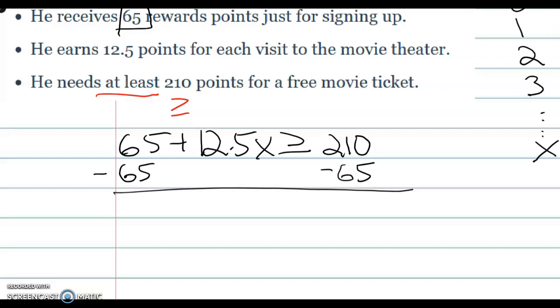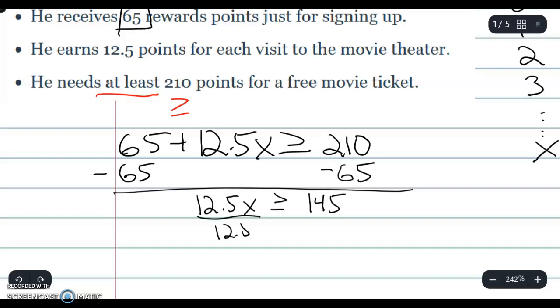And that's going to get me 12.5x is greater than or equal to 145. Then I'm going to divide by 12.5. This will cancel out, leaving x is greater than or equal to 11.6.